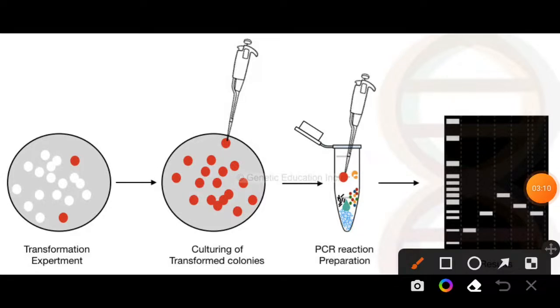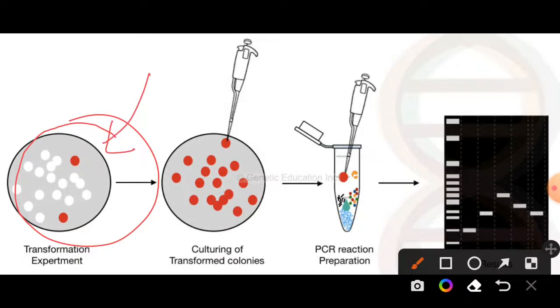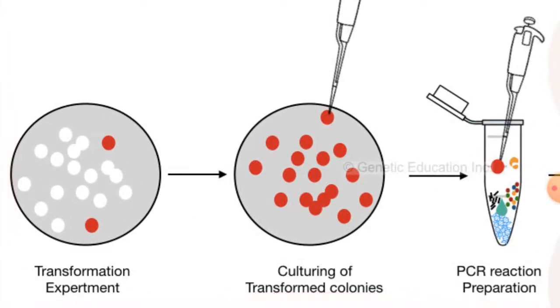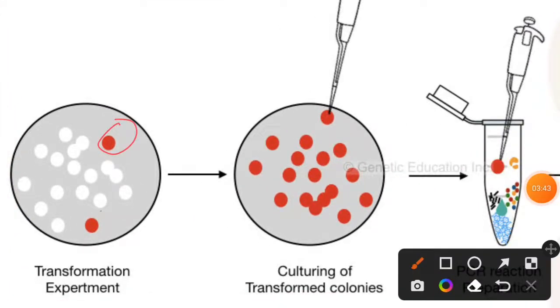First of all we will get something like this after the transformation procedure. By screening techniques, here I am talking about screenable markers, for example the secondary markers that we have used, or if we are using insertional inactivation, with the help of that we can analyze which of the colonies contain cells that have our recombinant DNA and which are not. Then we will subculture those recombinant DNA containing colonies.